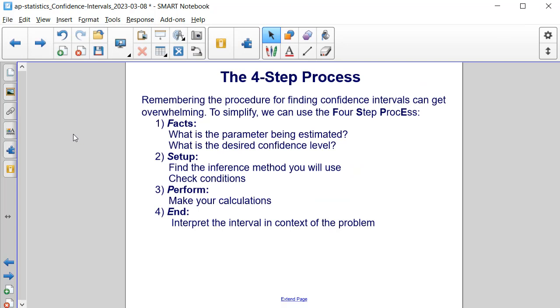Now, remembering the procedures for finding the confidence intervals can become very overwhelming. To simplify, we can use this four-step process. First, find the facts: What is the parameter being estimated? What is the desired confidence level? Second, setup: Find the inference method you will use and check the conditions. Third, perform the indicated operations to make your calculations. And fourth, interpret the interval in the context of the problem.